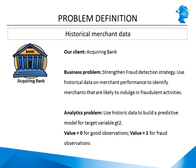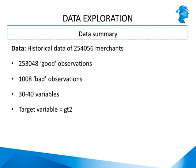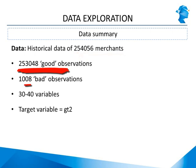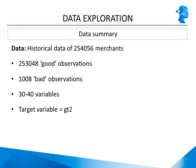The historical data consists of 254,056 merchants: 253,048 are good merchants and 1,008 are bad or fraudulent merchants. We have data on a large number of merchants, including 1,008 fraudulent cases. We have approximately 30 to 40 variables which we can use to build the model to predict fraud, and the target variable is gt2.